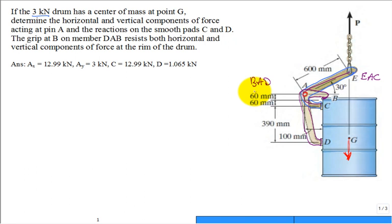So two members, EAC and BAD, and those two members are pin connected at A. Now, in the next problem that we're going to look at today, there's going to be a pin connecting three members, and that's going to be more difficult. But it's a lot easier when I just have a pin connecting two members.